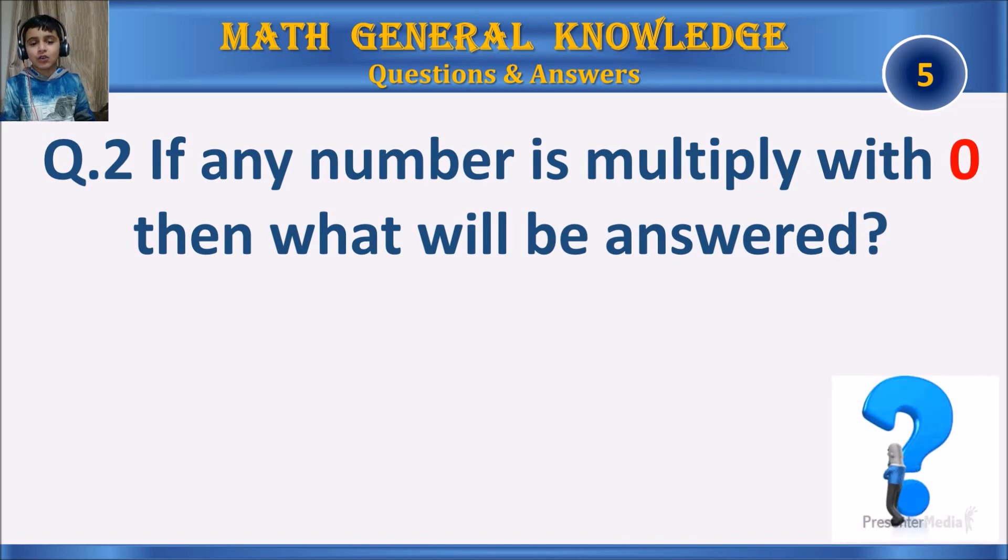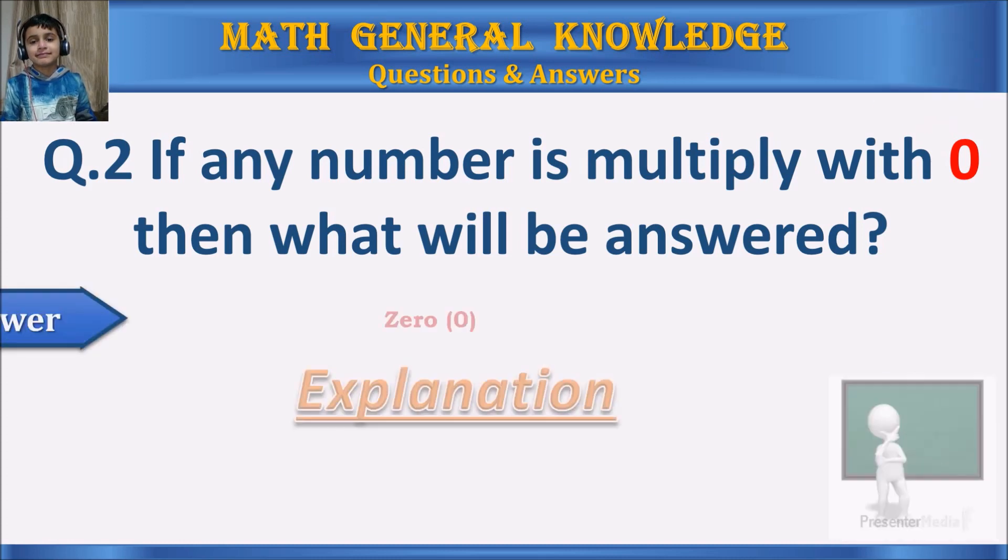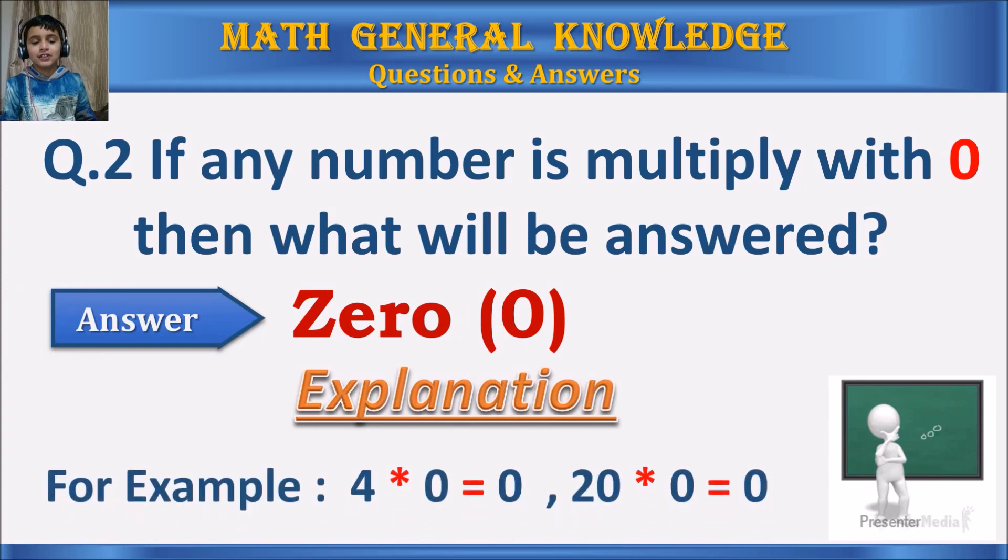Question 2: If any number is multiplied with 0, then what will be answered? Your time starts. The answer is 0. For example, 4 times 0 equals 0, 20 times 0 equals 0, and so on.